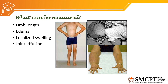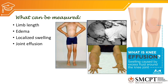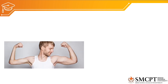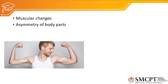Another measurement we can take is for joints. Commonly, a joint undergoes enlargement because of joint effusion, which is the collection of fluid in the joint spaces. For example, swelling caused by excess fluid accumulated inside the knee joint space causes the inflamed knee to look larger than the other knee. Other measurements we can take are for muscular changes — muscles can undergo hypertrophy or atrophy. Hypertrophy means enlargement of the muscle bulk or muscle belly, whereas atrophy means a reduction in the muscle belly or muscle fibers.